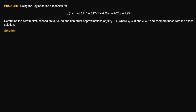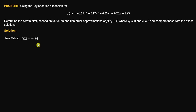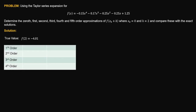To tabulate our solution for a clearer view: the true value of the function at x = 2 is negative 4.01. Where did we get that? Using the analytical solution, we substitute x = 2 into the original expression: f(2) = negative 0.15(2⁴) minus 0.17(2³) minus 0.25(2²) minus 0.25(2) plus 1.25, which gives us negative 4.01 — that is the true value.